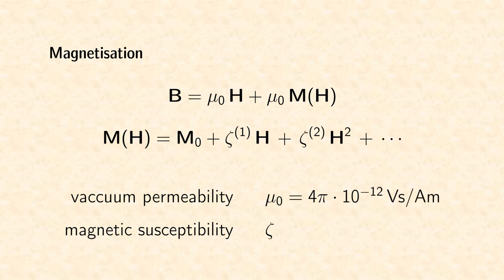The magnetic counterpart of the electric polarization is the magnetization M. For historical reasons, it is linked to the magnetic field and the magnetic induction formally in a slightly different way.